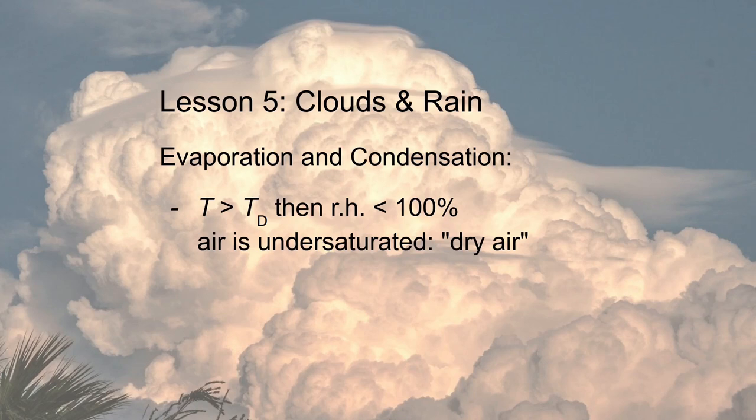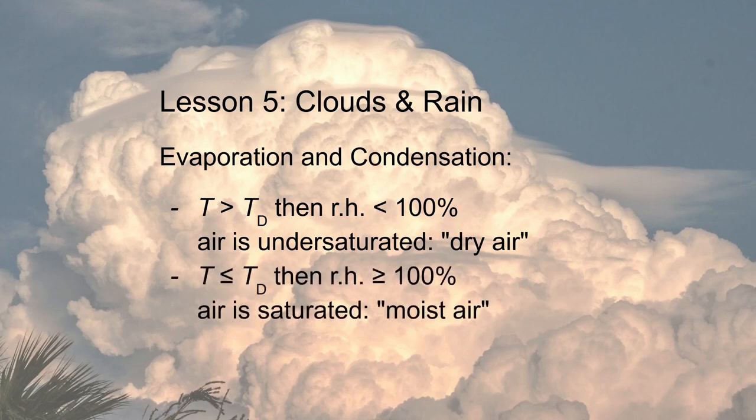When the temperature is equal to or lower than the dew point, the air is saturated and the relative humidity is 100% or higher. In this case the condensation rate is higher than the evaporation rate and water droplets will form. The air is said to be moist.